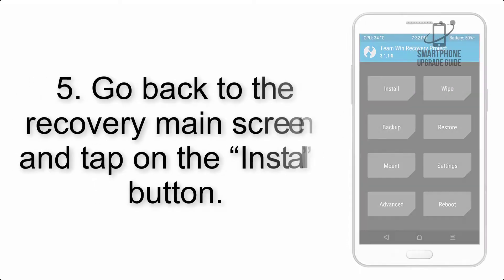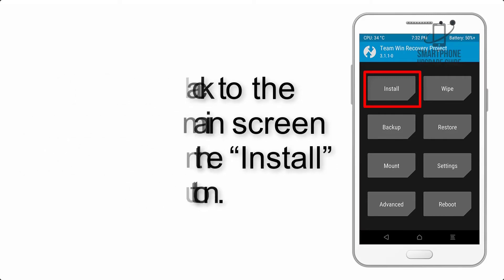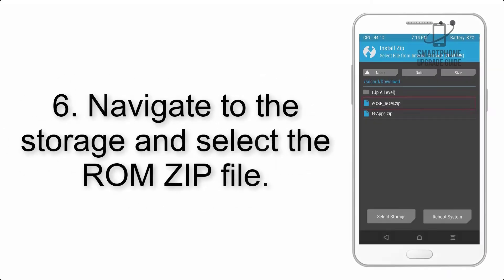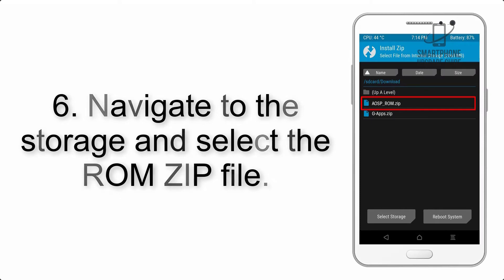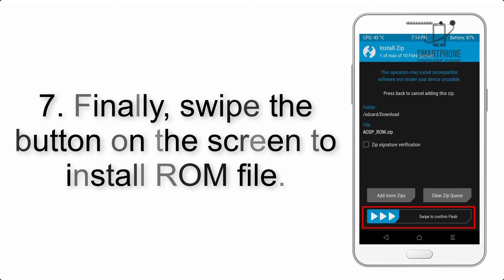Step 4: Swipe the button to wipe the device. Step 5: Go back to the recovery main screen and tap on the Install button. Step 6: Navigate to the storage and select the ROM zip file.